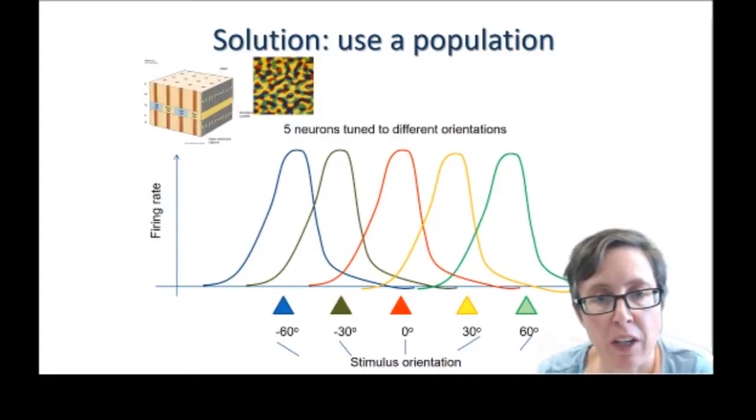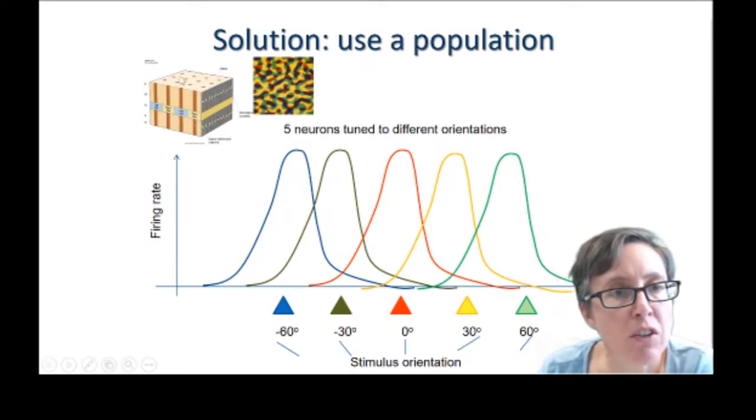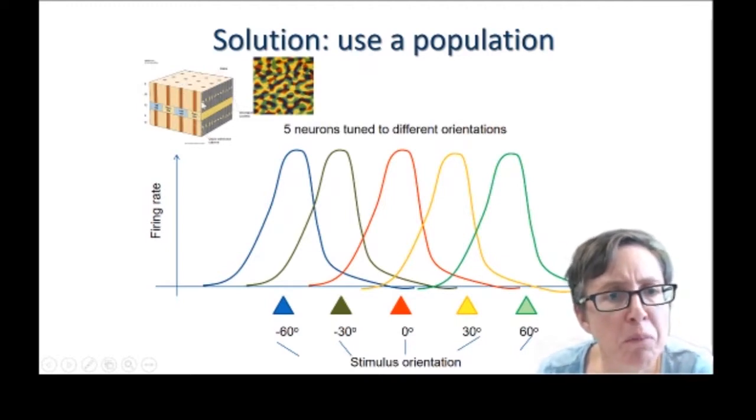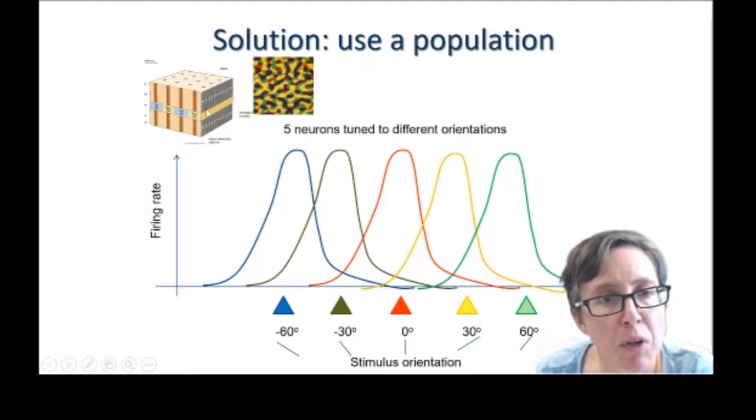But primary visual cortex doesn't just contain one neuron at each location. As we've seen, it contains a range of neurons tuned to different orientations at the same location. So this represents a little chunk of primary visual cortex, what Hubel and Wiesel called a hypercolumn. It represents neurons that are all tuned to roughly the same location in the retina. But you've got some of them in layer four, you've got neurons that are receiving input from the left eye and the right eye. In the other layers they're mainly binocular. And you've got these columns of preferred orientation.